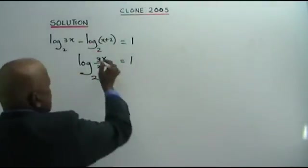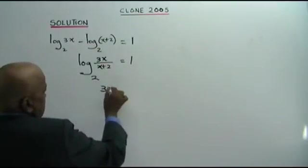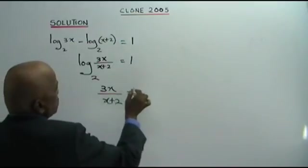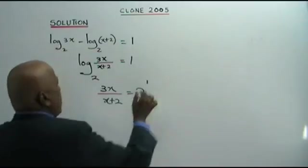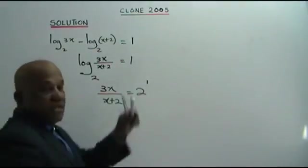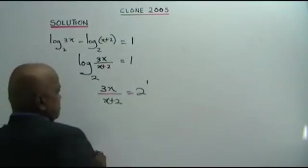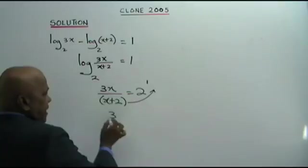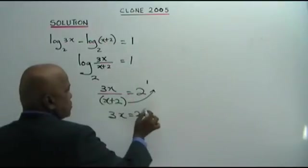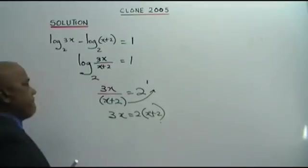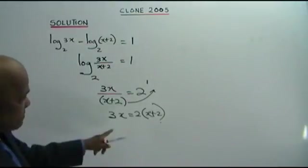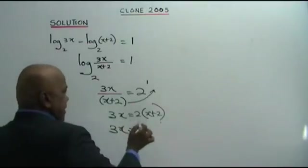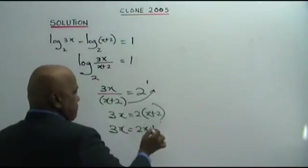So 3x over x plus 2 equals to 2 to the power of 1. Applying the law. Now we take this, move it up here. So 3x is equal to 2 times x plus 2. What do you get? 3x is equal to 2x, 2 times 2, 4.